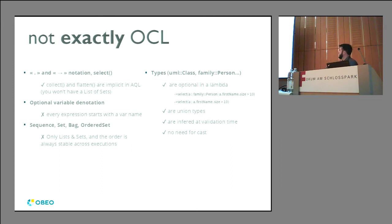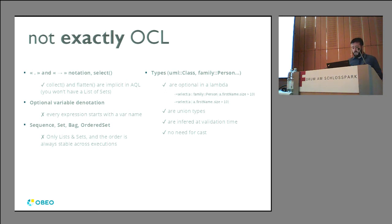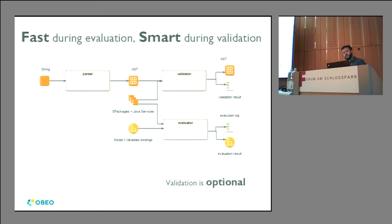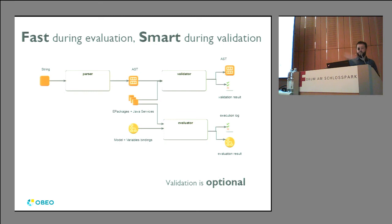From an engine perspective, you give AQL a string, it parses it and produces an AST, from which it can validate or evaluate. Importantly, the whole validation step is optional at runtime — we use it at tooling time, but when the modeler is running directly, we go straight from parsing to evaluation, which saves quite a bit of time.